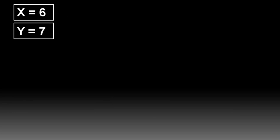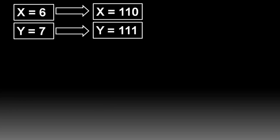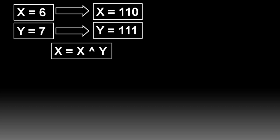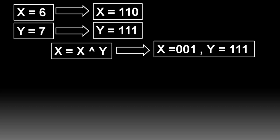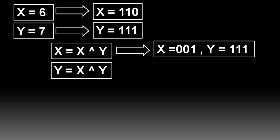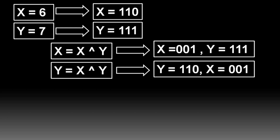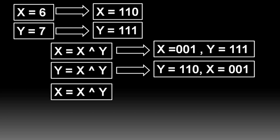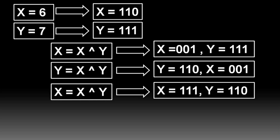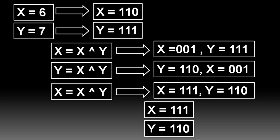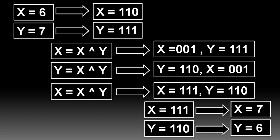Let's make it more convenient. We have X equals 6 and Y equals 7, with binary values 110 and 111 respectively. First we XOR X and Y and store the value in X — X equals 001 and Y equals 111, unchanged. Next we XOR X and Y and store the value in Y — Y equals 110 and X equals 001. Finally we XOR X and Y and store in X — X equals 111 and Y equals 110. Converting to decimal: X equals 7 and Y equals 6 — the values are successfully interchanged.